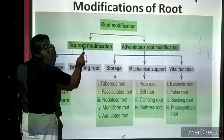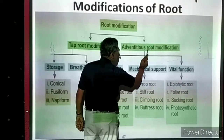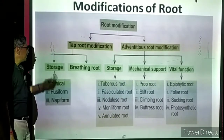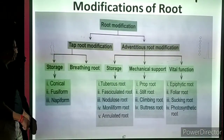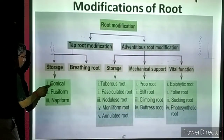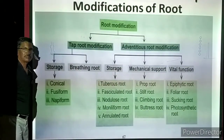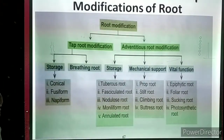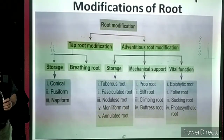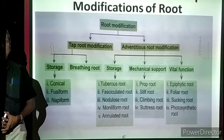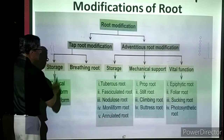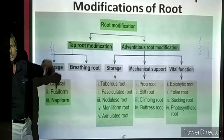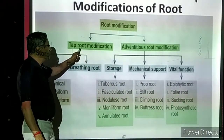The outline classification of root modification: tap root modification and adventitious root modification (also called fibrous root modification). For tap root modification, there are two types: storage and breathing root. For breathing root — the root is normally under the soil, but in some marshy land plants, some roots grow upward, come above the soil and water level, and are called breathing roots or respiratory roots. They have many holes through which air enters and exits the root.